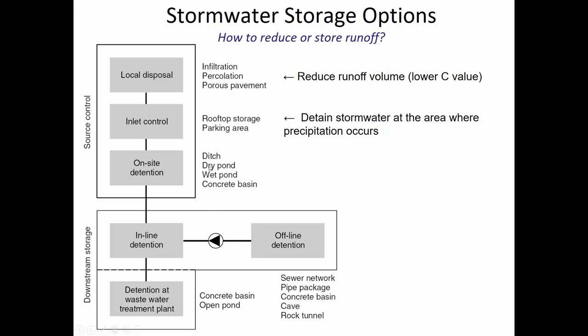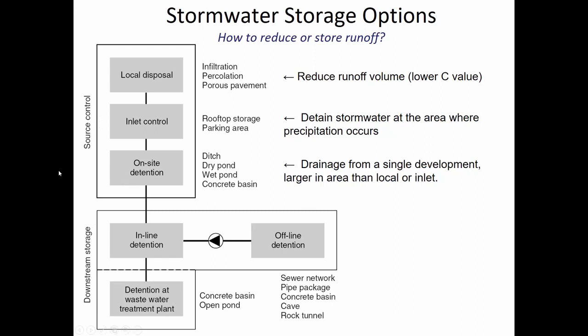Engineered structures such as ditches or ponds — extended detention ponds or constructed wetlands — are used where you have a relatively small contributing upstream area. The distinguishing factor between source control and downstream storage is usually how much time the water has spent in a pipe to get to where it's being stored. Anything larger than a couple hundred feet would be downstream storage, but collecting water from catch basins moving less than a few hundred feet to a pond could still be considered source control.